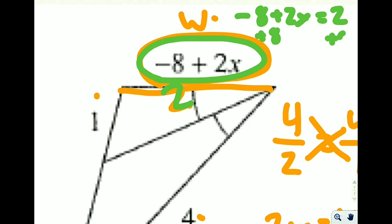Then it's just a matter of doing a simpler algebra problem where we add 8 to both sides and get 2x equals 10. And divide both sides by 2, so we get x equals 5.